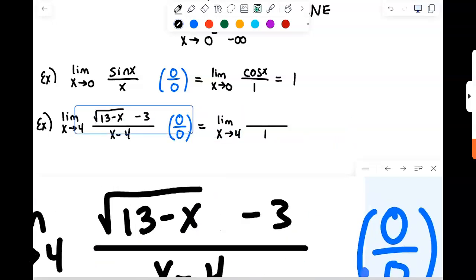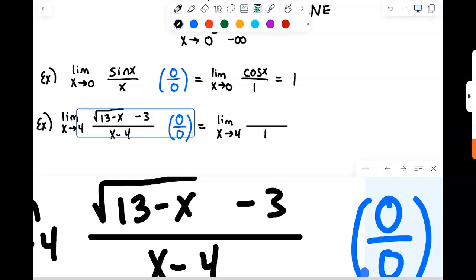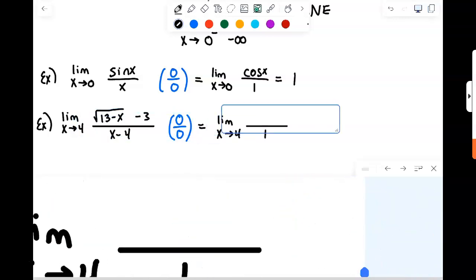So we have to do the derivative of the numerator. So that means we have to do the derivative of the square root of 13 minus X. Remember, square root of 13 minus X can be rewritten as 13 minus X to the 1 half. So now using the chain rule and the power rule,